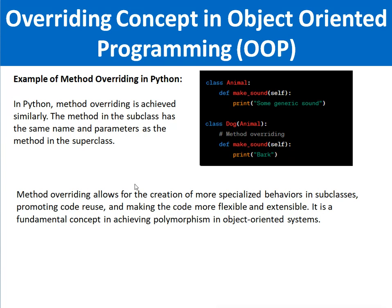In Python, method overriding is achieved similarly. The method in the subclass has the same name and parameters as the method in the superclass. For example, we have a class Animal with a method makeSound(self) that prints 'some generic sound' — this is the base class. Then we have a class Dog which inherits from the Animal class, and we define makeSound(self) which prints 'bark'. Here we are redefining the makeSound method in the child class.